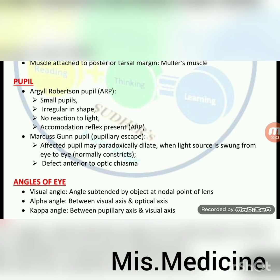Pupils: Argyll Robertson pupil — small pupils, irregular in shape, no reaction to light, but accommodation reflex present. Marcus Gunn pupil — pupillary escape; the affected pupil may paradoxically dilate when light source is swung from eye to eye (normally it constricts). Defect is anterior to the optic chiasm.